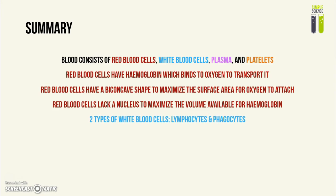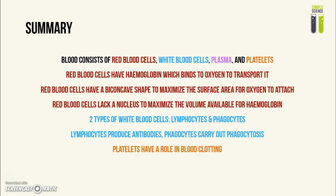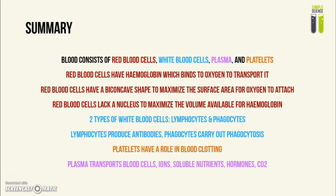There are two types of white blood cells: lymphocytes and phagocytes. Lymphocytes produce antibodies, while phagocytes are involved in phagocytosis. Platelets are little cell fragments that play a role in blood clotting. Plasma transports blood cells, ions, soluble nutrients, hormones, and wastes like carbon dioxide.